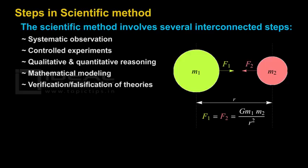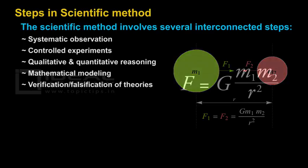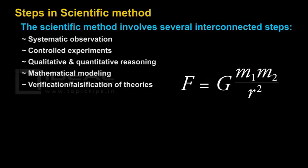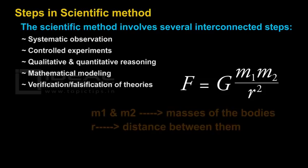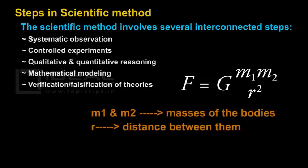So he reached the mathematical modeling. He gave this force a mathematical equation which is: F is equal to G into m1 m2 divided by r square, where m1 and m2 are the masses of the bodies and r is the distance between them. And after all these, he finally verified that his theory is correct, and it became the famous theory of gravity.